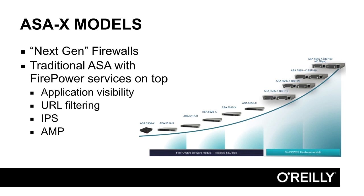Firepower services includes application visibility and control, which means it can inspect traffic at the application level. You can do URL filtering by URL categories. It also has an IPS — Intrusion Prevention System — and something called AMP, which is Advanced Malware Protection. We will keep Firepower services out of this course for now and focus on the traditional ASA software.